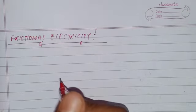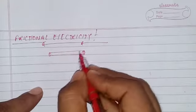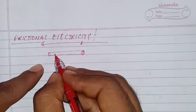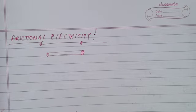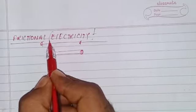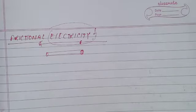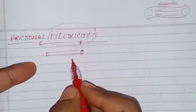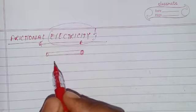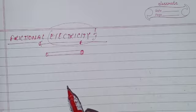If a glass rod is rubbed with silk, the glass rod gets electrified and it attracts some light objects. The property of a rubbed substance due to which it attracts light objects is called electricity. The electricity developed by rubbing or friction is called frictional electricity. In this case, rubbing silk with the glass rod generates what is known as frictional electricity.